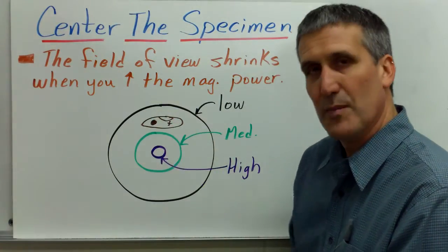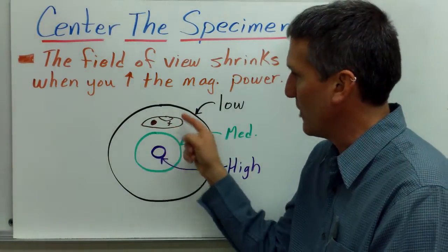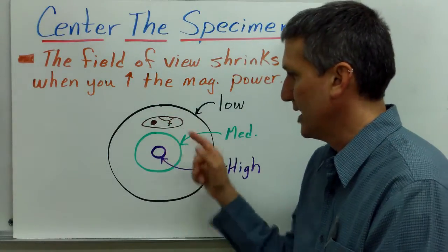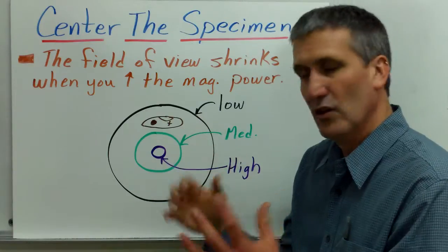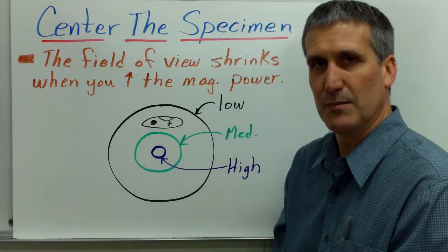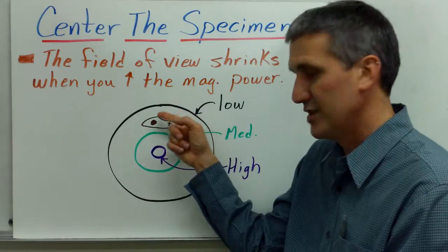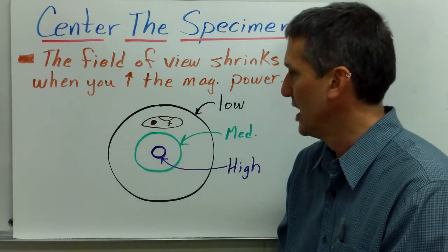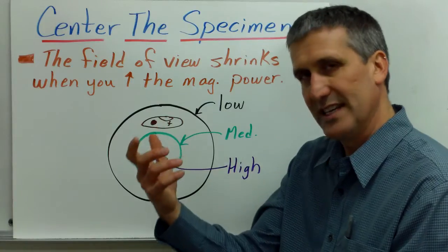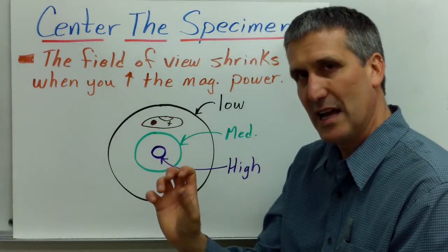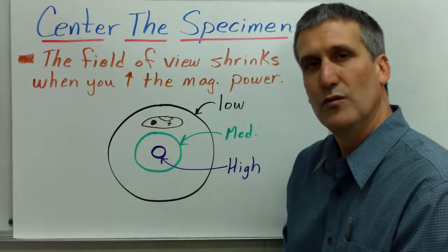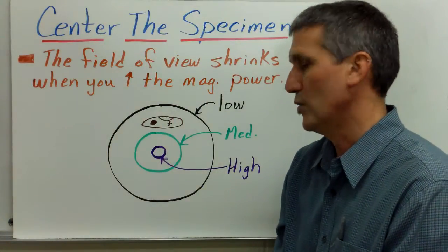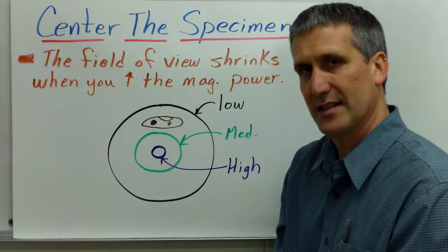So, if we use our paramecium example here, we've got the paramecium on the edge of the low power field of view. When you switch to medium power, it'll look like the paramecium disappeared. But it's not a magic trick, it's because you forgot to center the specimen before you changed the objective power. So, it's easy enough to fix, you just go back down to the lower power, you move the specimen to the center of the field of view, and then you move back to the medium objective or the higher objective.